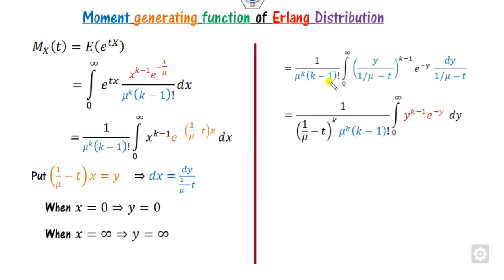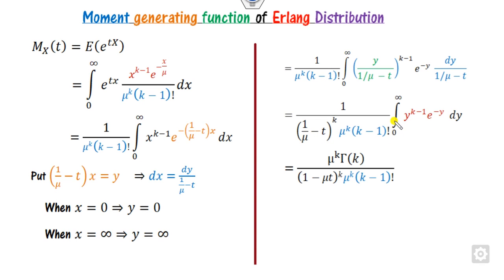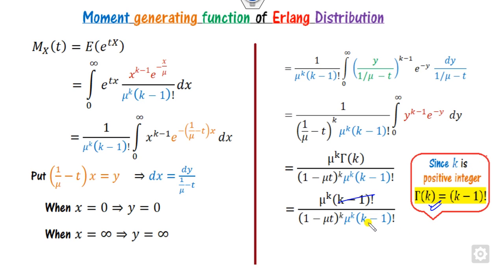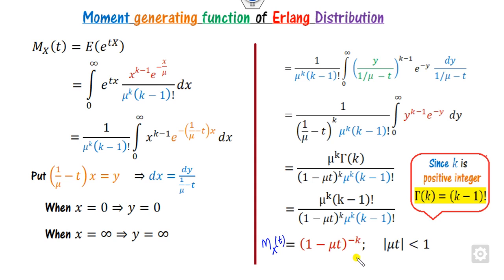The remaining integral is recognized as the gamma function of k. Since k is a positive integer, the gamma function of k equals (k-1) factorial. After cancellation, the final result is the moment generating function of the Erlang distribution: (1 minus mu*t) raised to the power negative k.